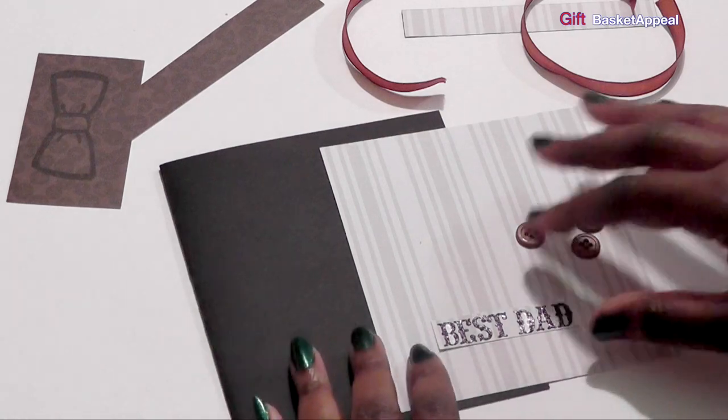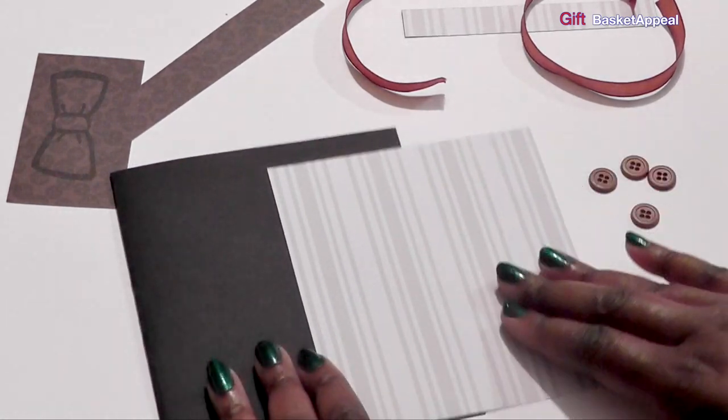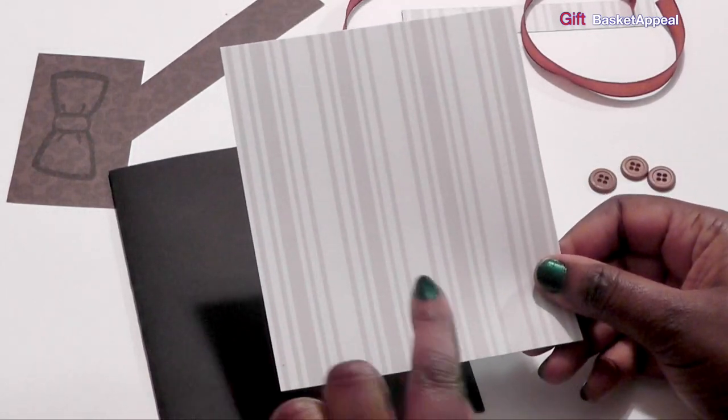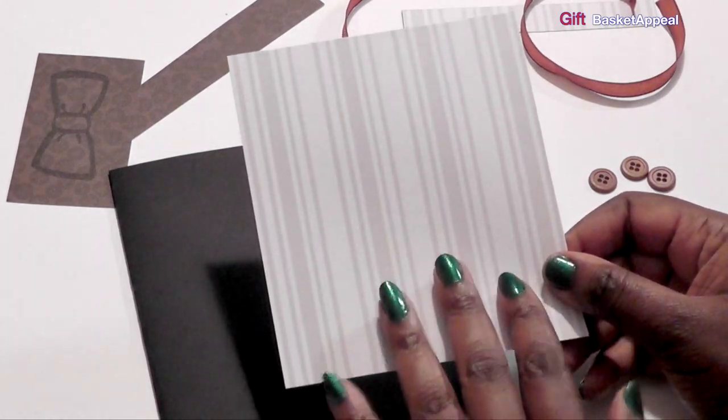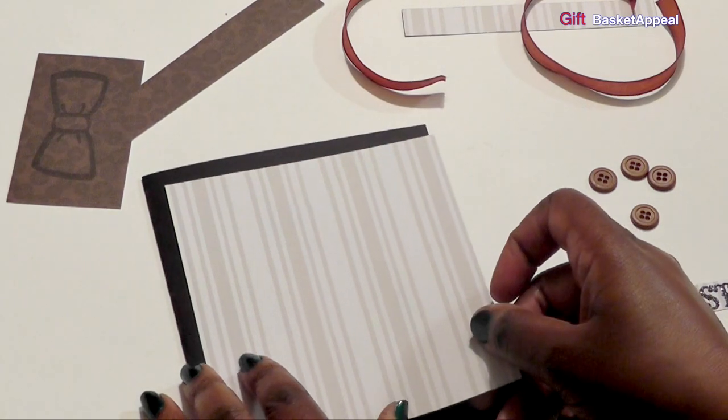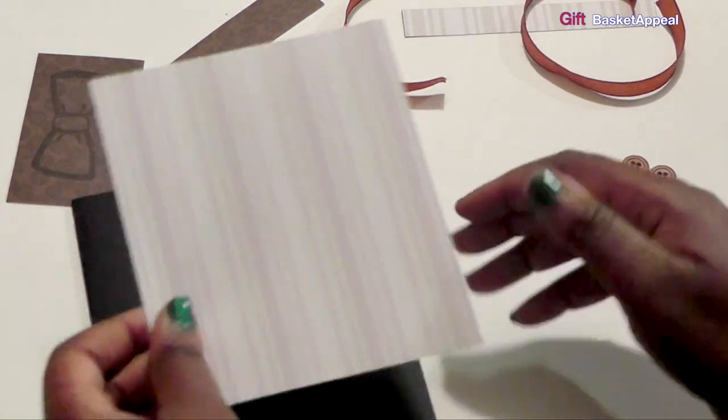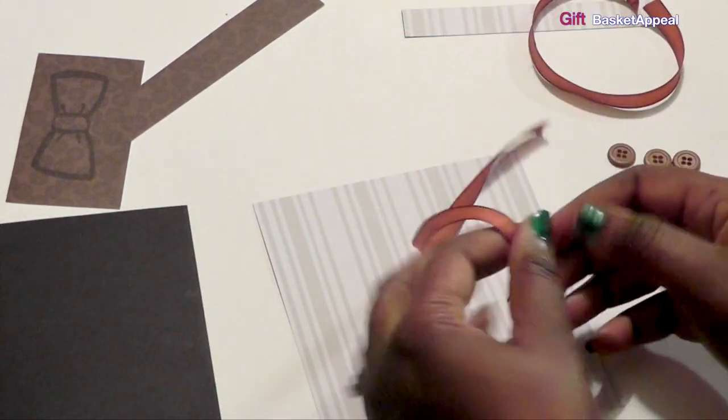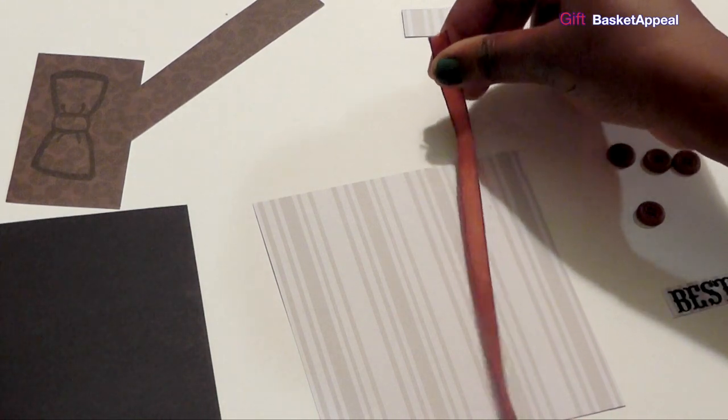I'm going to be making a shirt and bow tie card and this is the pattern that I want to use for my shirt. I really like the way the paper looks and it reminds me of dad's shirt, like as if he's going to work with a bow tie. And so what I'm going to do is I want suspenders on here as well. And so I've got this thin ribbon that I'm going to use for suspenders.